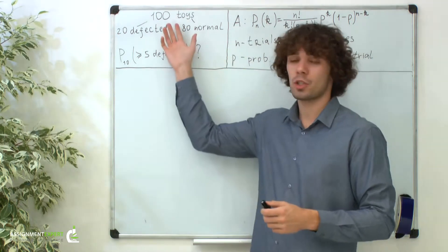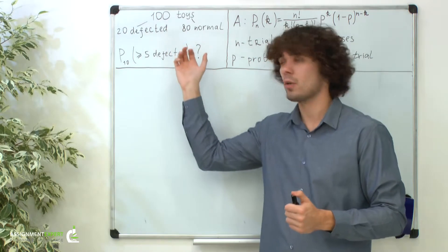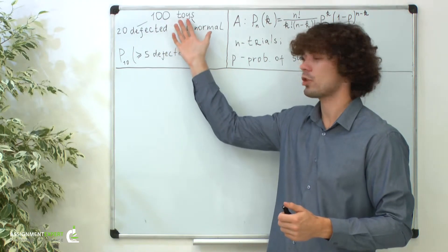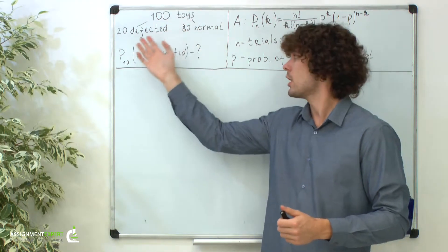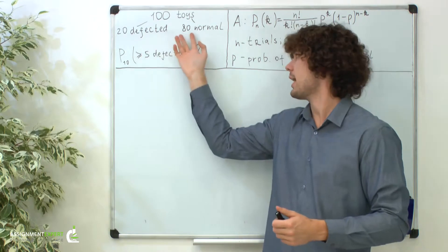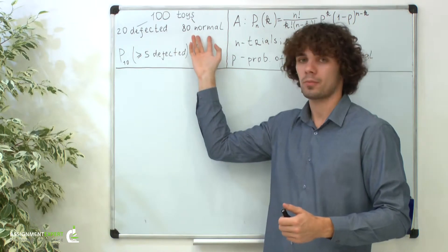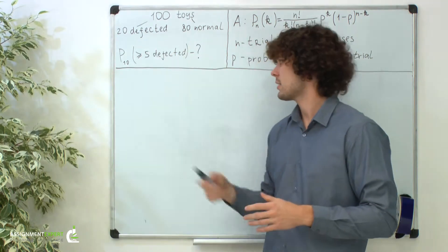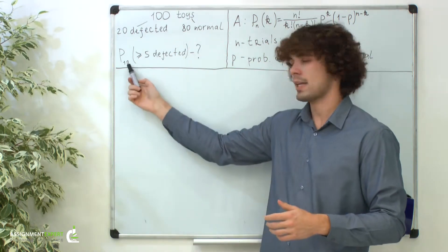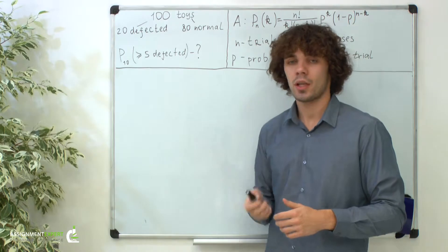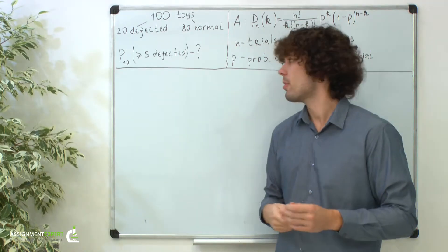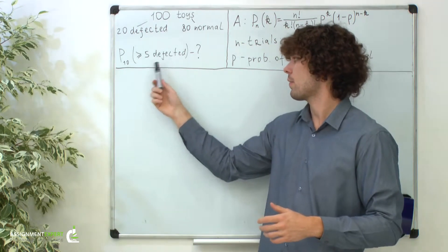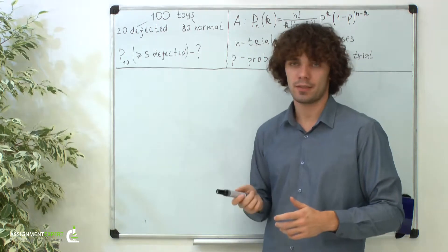Records from a toy factory show us that among 100 newly produced toys, 20 are defected and 80 are normal. A quality control test takes 10 toys. What is the probability that 5 or more of them are defected?